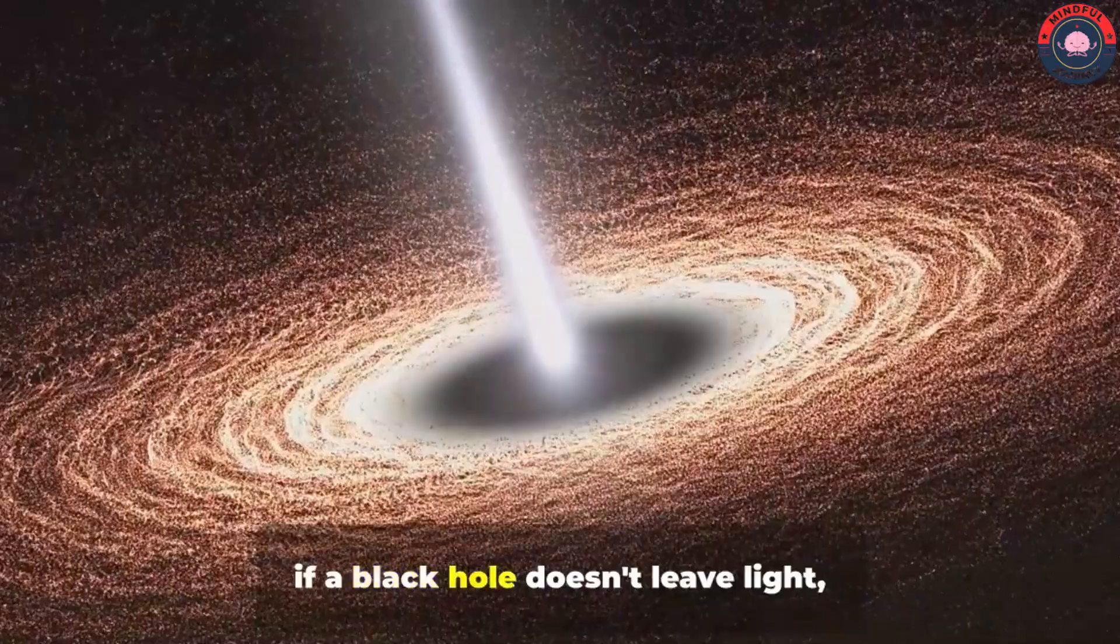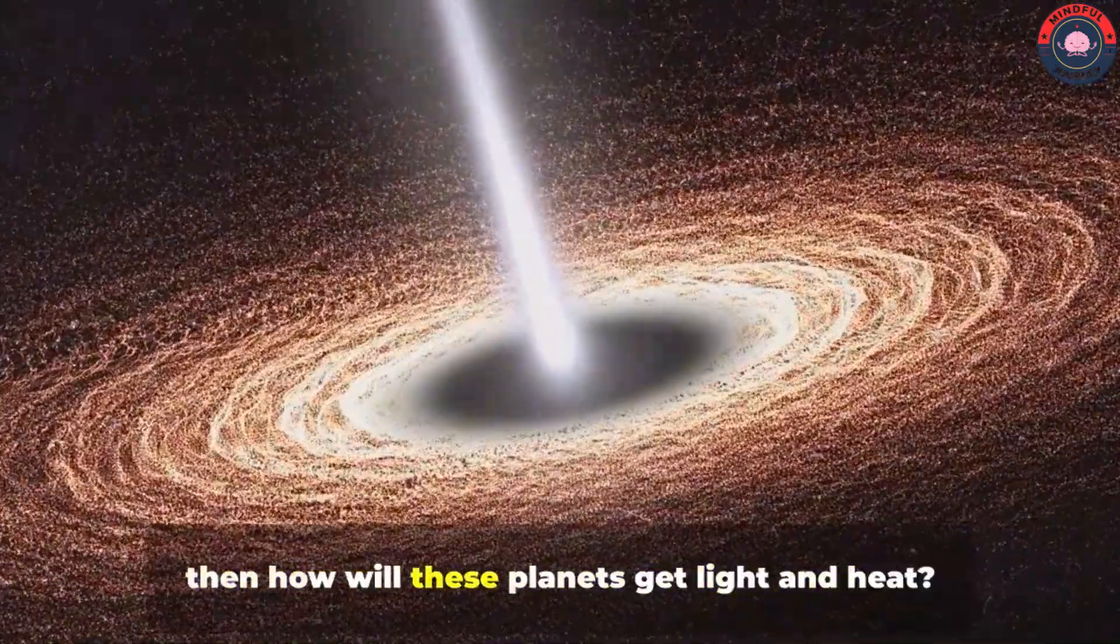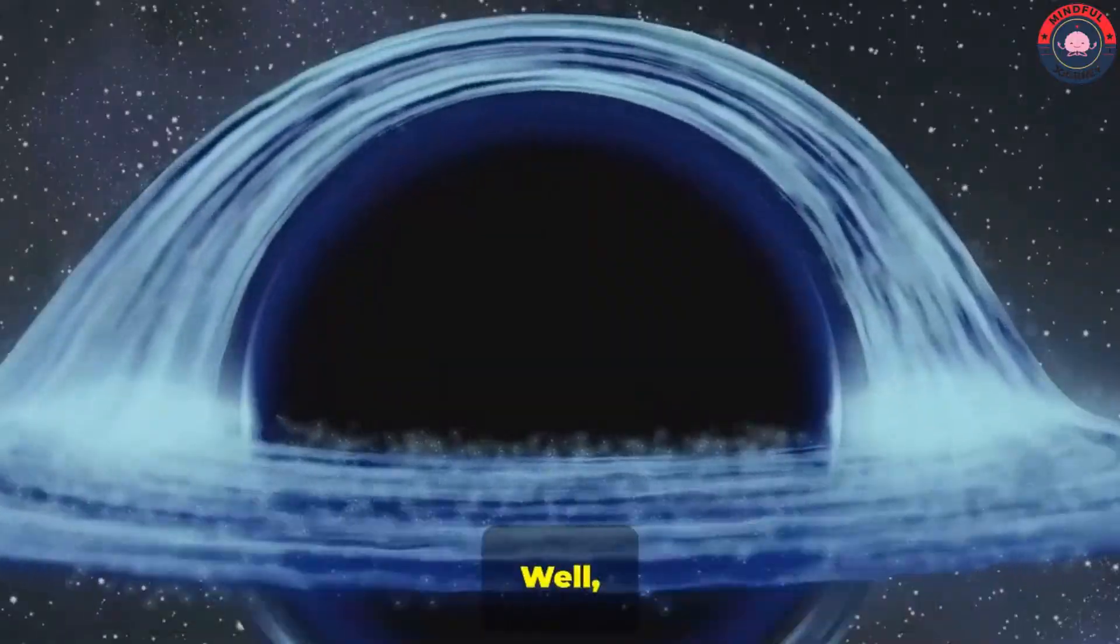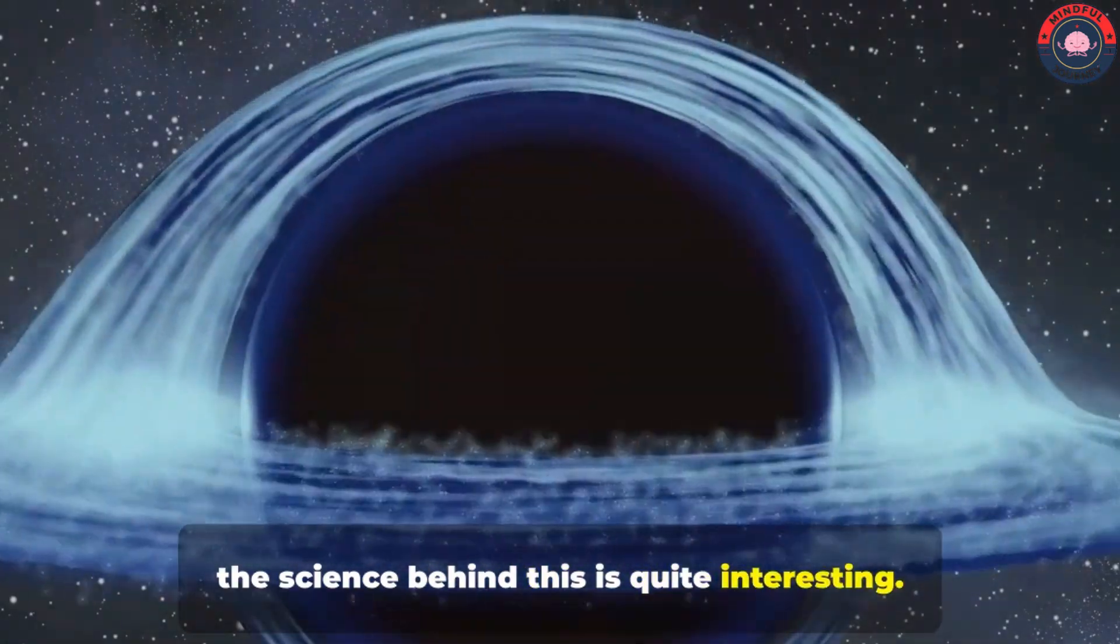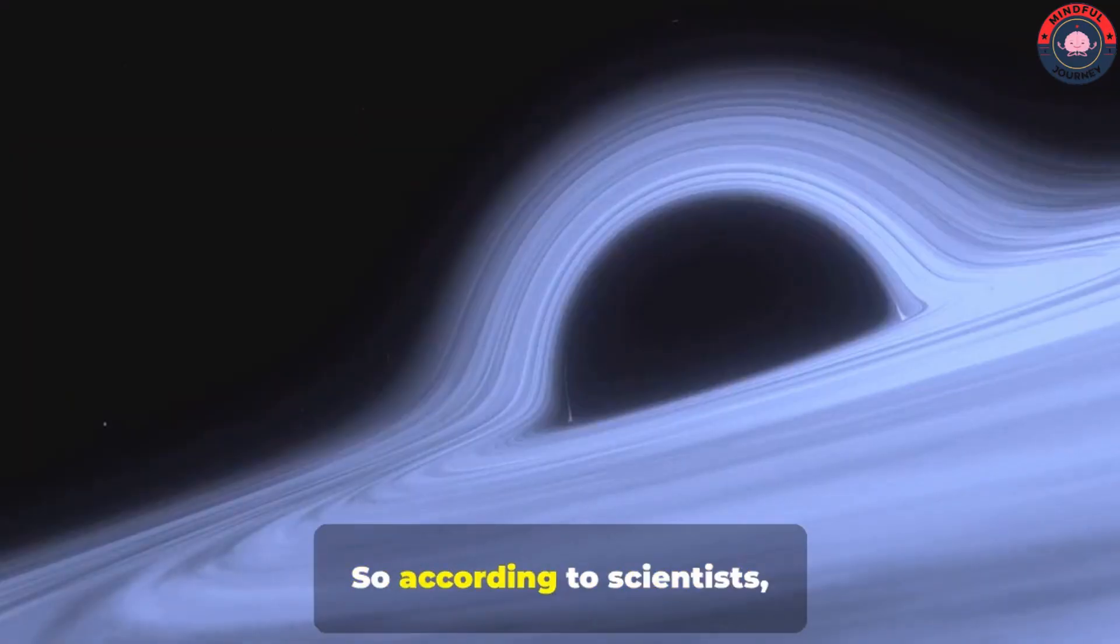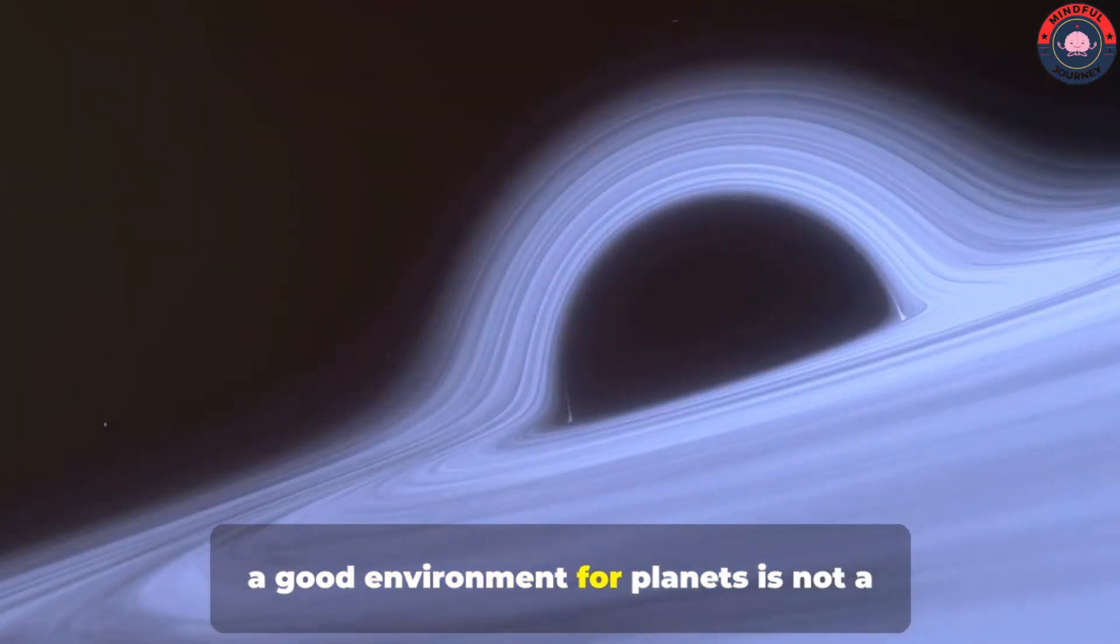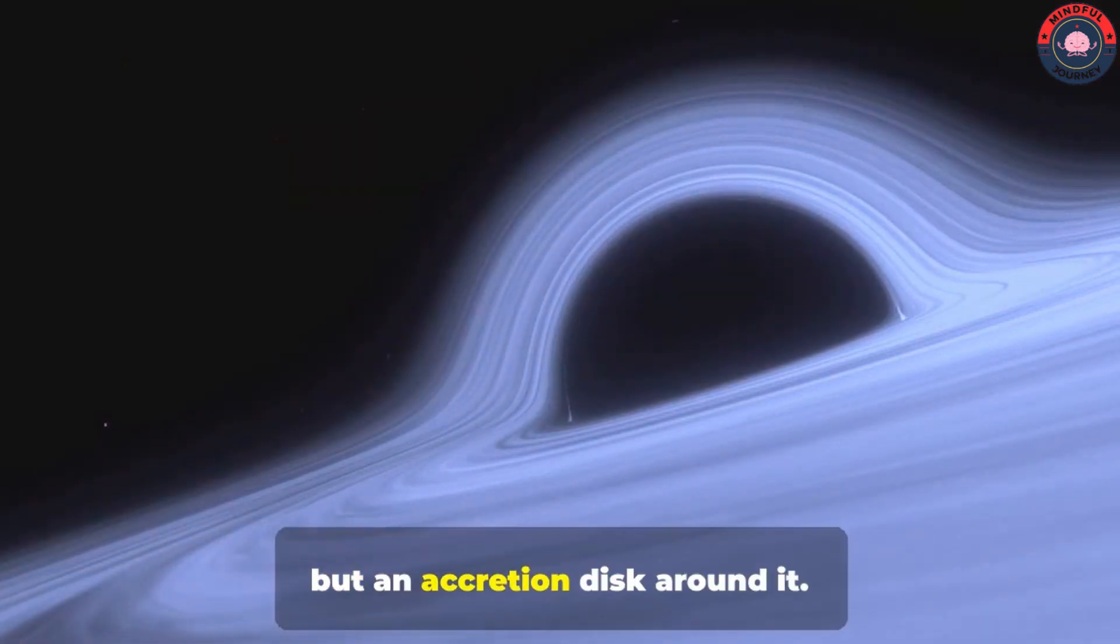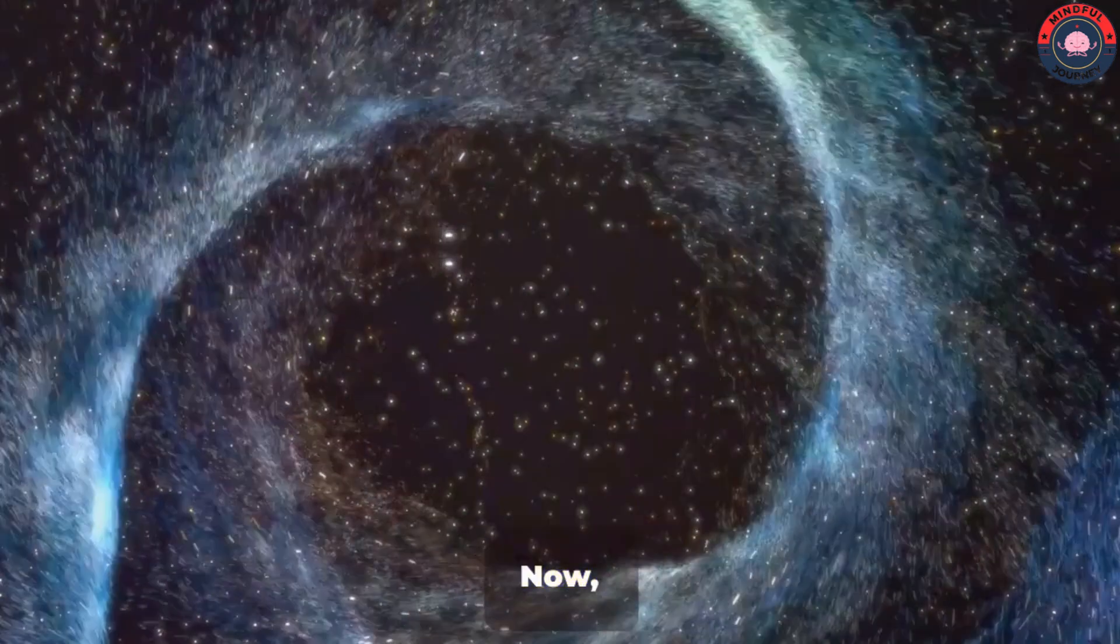Now the question is, if a black hole doesn't leave light, then how will these planets get light and heat? Well, the science behind this is quite interesting. Listen carefully. So according to scientists, a good environment for planets is not a black hole, but an accretion disk around it.